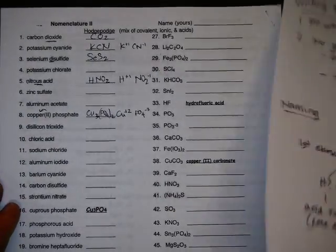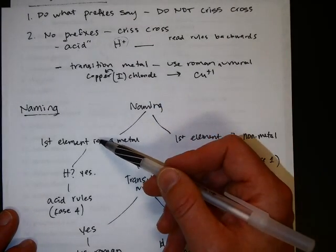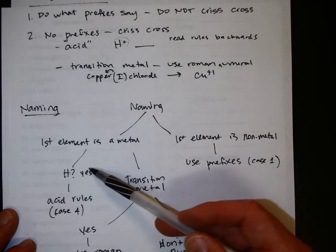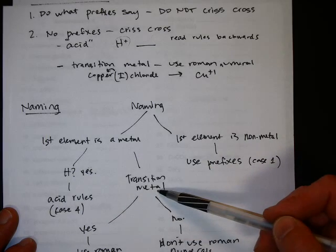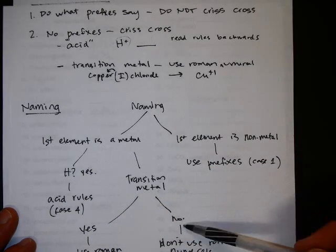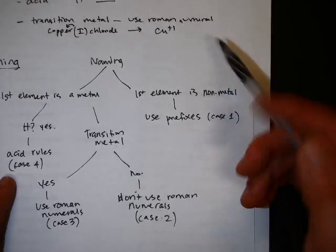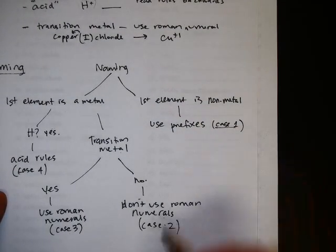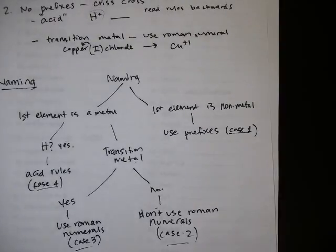When you're naming, there's kind of more rules, and they're kind of listed here. You know, if the first element's a metal, then it could be an acid, which is case four, if it has a hydrogen in it. If it's a transition metal, you're going to use Roman numerals. If it's not, you don't use Roman numerals. And then if the first element's a non-metal, then you just use prefixes. So those are kind of all the cases that are listed here, one, two, three, and four. And you can refer back to these examples as well if you've got questions on them.